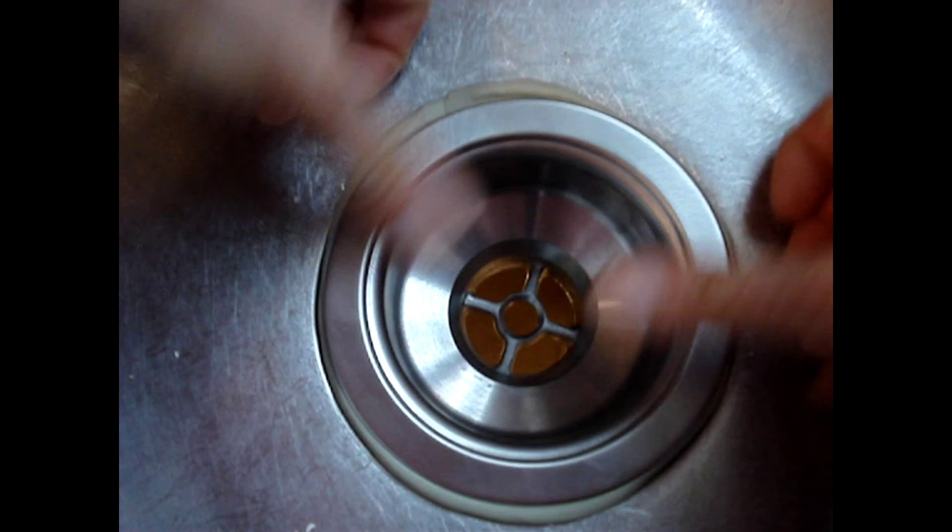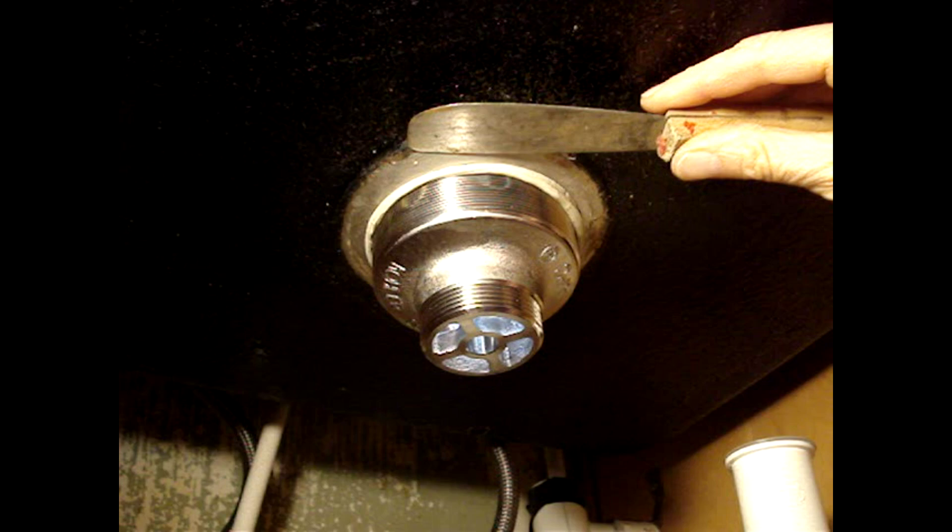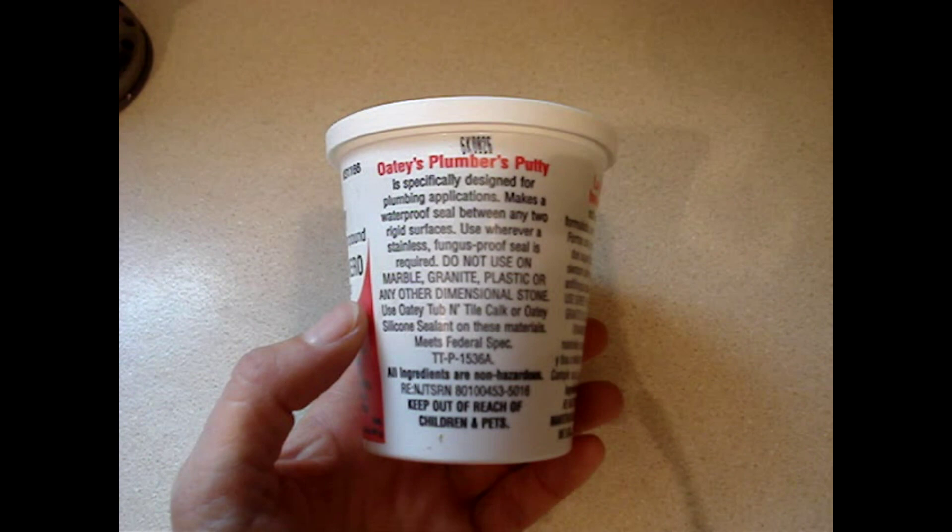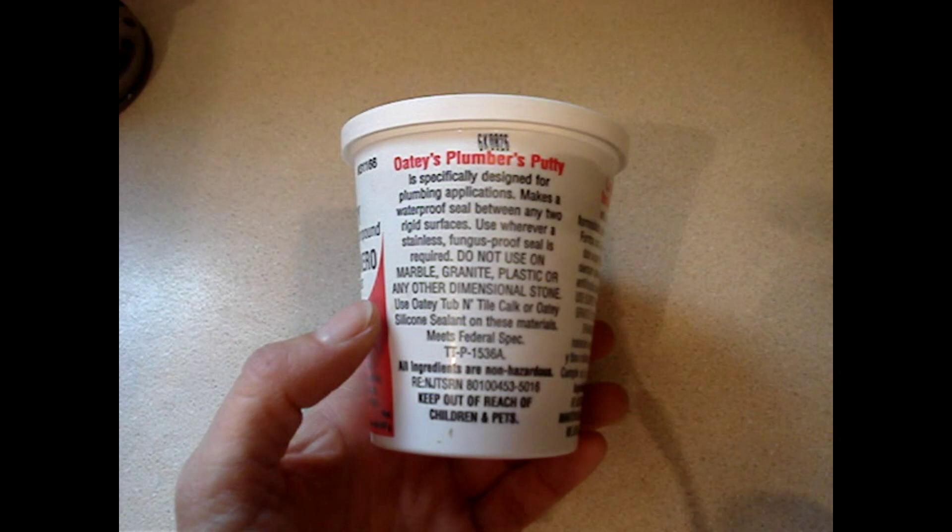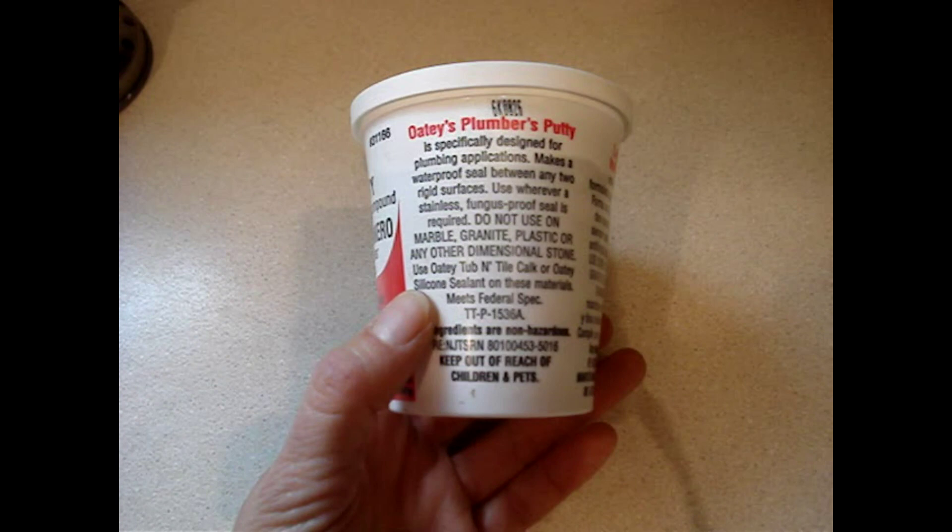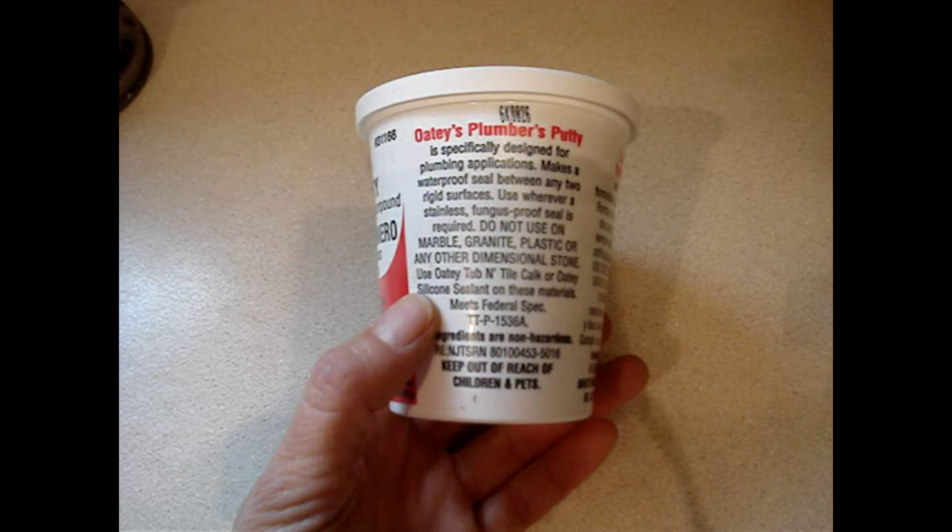Remove any excess putty from the underside. If the sink is marble, granite, or some types of plastic, plumber's putty may stain the sink. Silicone sealant is recommended on these materials. The downside of silicone is that you have to wait for it to set up before you can use the sink. Plumber's putty doesn't require any setup time.